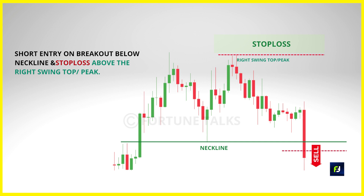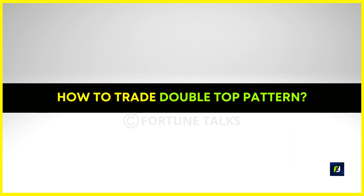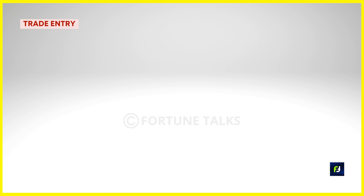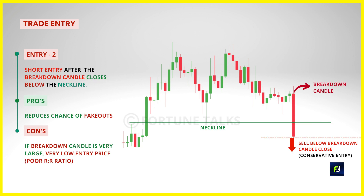Most trading gurus will tell you to short the double top breakout when the price breaks below the neckline and set the stop loss above the highs. However, there are two issues: first, after a strong move lower, the market could reverse higher proving a false breakout and hitting your stop loss. Second, the stop loss is inherently very large and does not offer a favorable reward-to-risk ratio. The most aggressive entry is when the price breaks below the neckline — wait for the breakout candle to close below the neckline, then take a short entry below the close or the low price of the breakout candle.